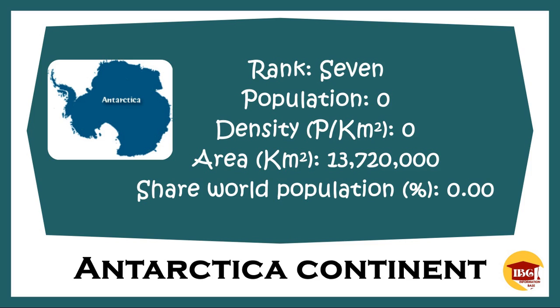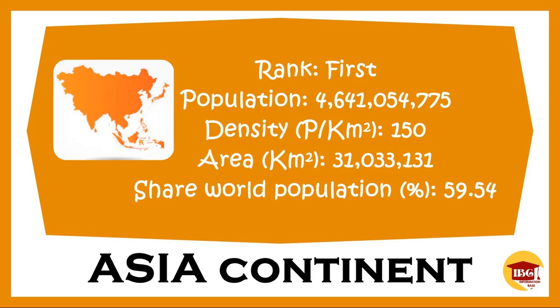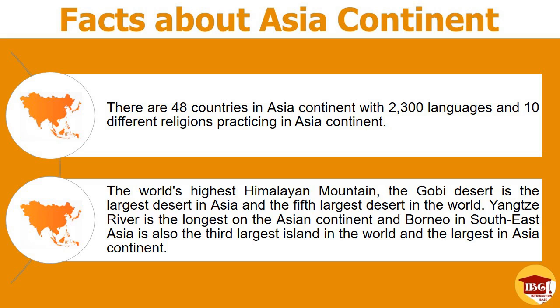The total area of Antarctica continent was 13,720,000 km² with 0 people per square kilometer density. The population around the continent of Antarctica was zero and the world population share is 0.0%. Next, the continent of Asia was the first continent in the world. The continent of Asia covers 31,033,131 km² of area with 150 people per square kilometer in density. The population around Asia was around 4,641,054,775 and shares the world's biggest population at 59.54%. There are 48 countries in Asia continent with 2,300 languages and 10 different religions practicing in Asia.